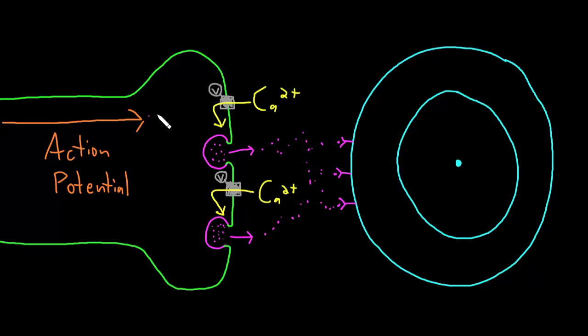An increased frequency of action potentials reaching the axon terminal will cause more opening of these voltage-gated calcium channels, so more calcium will flow into the axon terminal. An increased concentration of calcium in the axon terminal will cause more synaptic vesicles to fuse with the presynaptic membrane, so a greater amount of neurotransmitter is released into the synaptic cleft. A longer duration of a train of action potentials will cause neurotransmitter release to occur over a longer period of time, meaning a longer duration of neurotransmitter being present in the synaptic cleft.